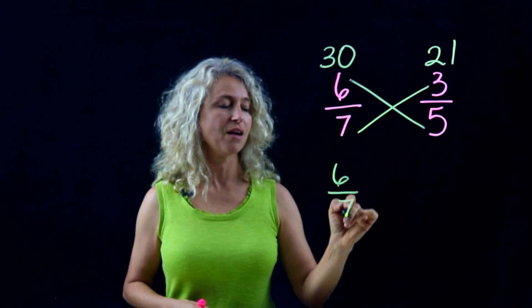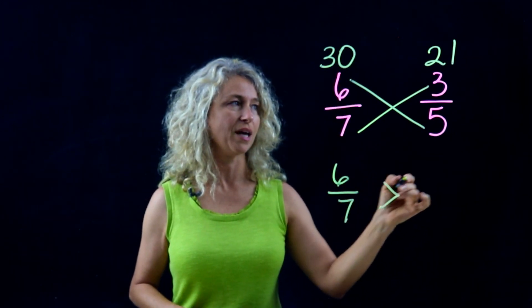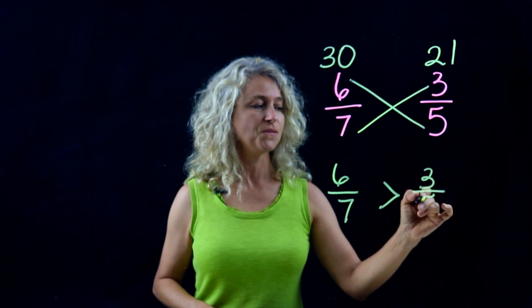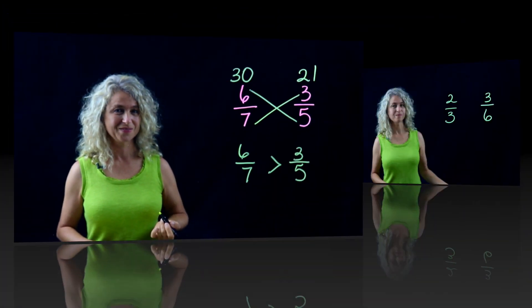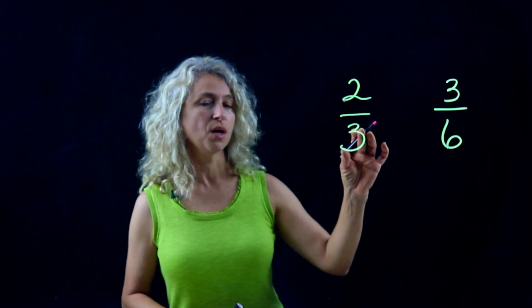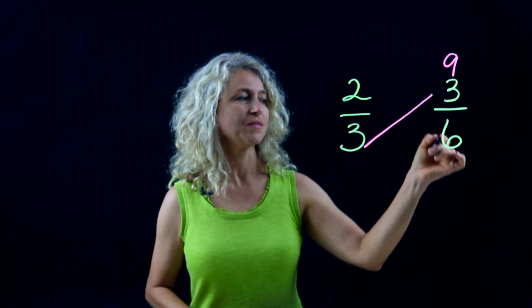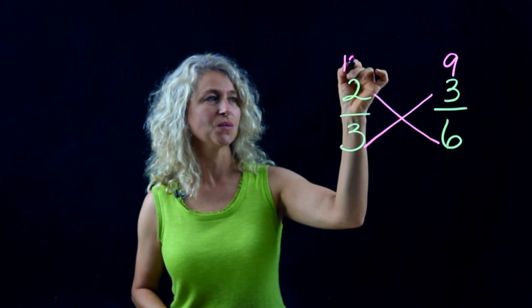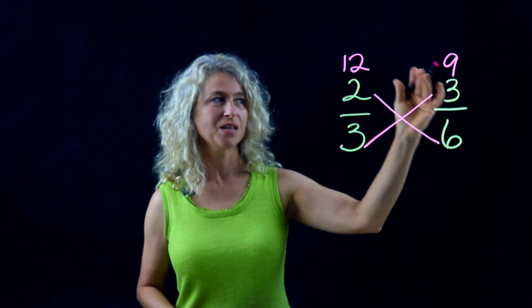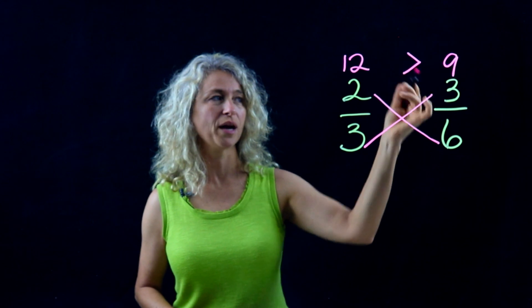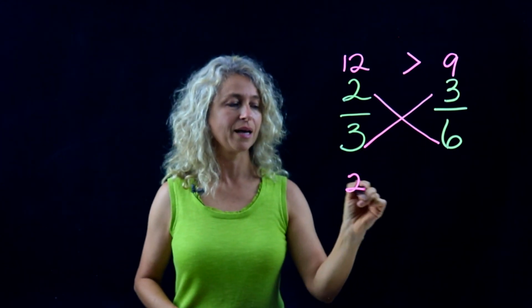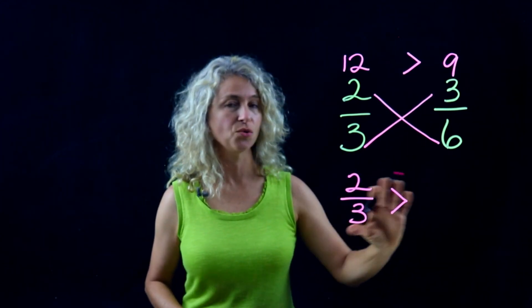Here's another quick example. Multiply three times three, six times two. Compare—you see that twelve is greater. So when you rewrite your problem, make sure that your inequality says two-thirds is greater than three-sixths.